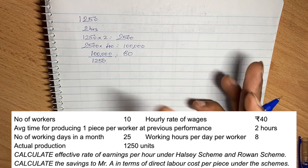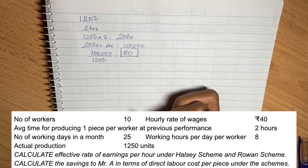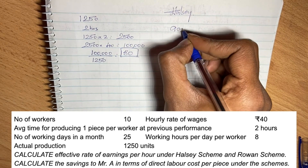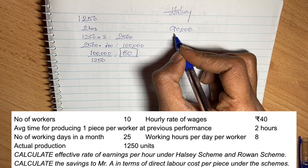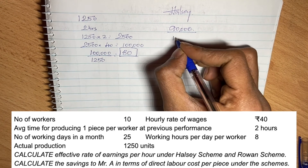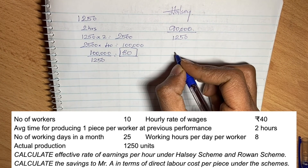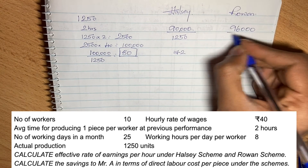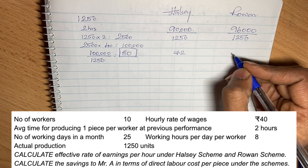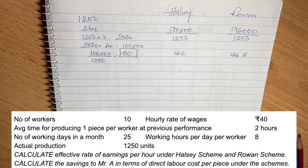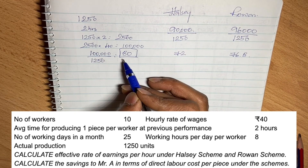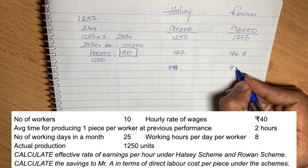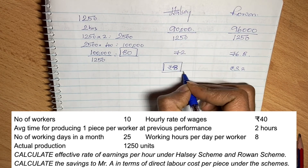If no incentive plan is adopted, the cost = 2,500 standard hours into 40 = 1,00,000 rupees for 1,250 units, giving cost per piece = 80 rupees. Under the Halsey plan, total wages = 90,000 divided by 1,250 = 72 rupees per piece. Under the Rowan plan, 96,000 divided by 1,250 = 76.8 rupees per piece. So savings under Halsey = 8 rupees, and under Rowan = 3.2 rupees per piece.